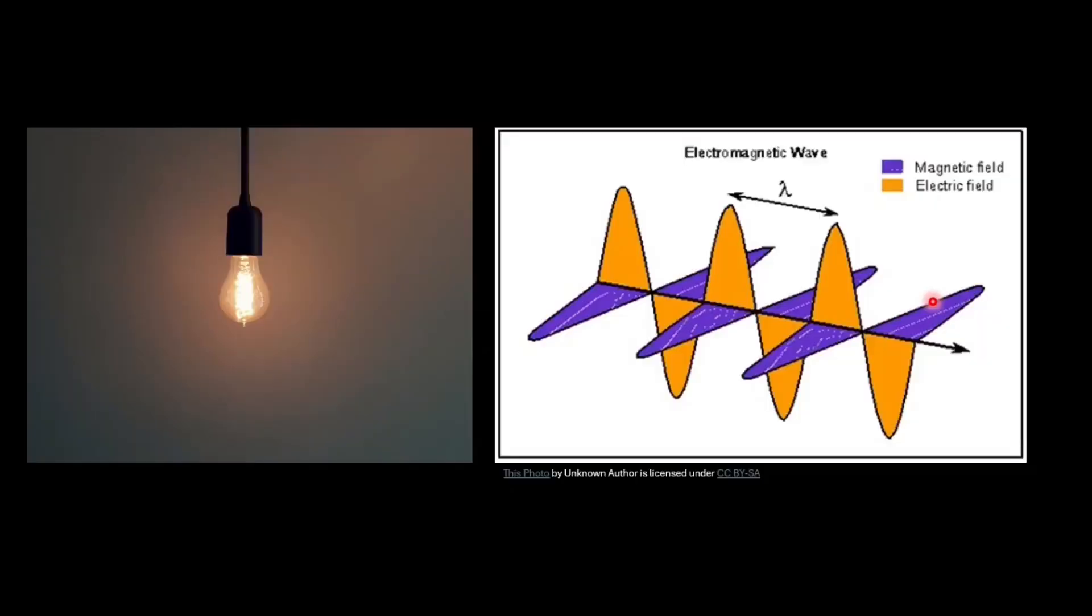In classical physics, light was considered to have wave nature. Light is a form of electromagnetic radiation and electromagnetic radiation consists of oscillating electrical and magnetic fields that are mutually perpendicular and perpendicular to the direction of propagation.